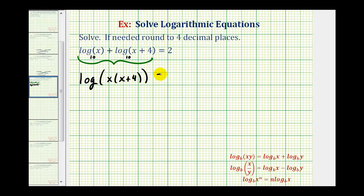This is still equal to positive two. Let's go ahead and find this product. So we'll have log of the quantity x squared plus four x equals two.